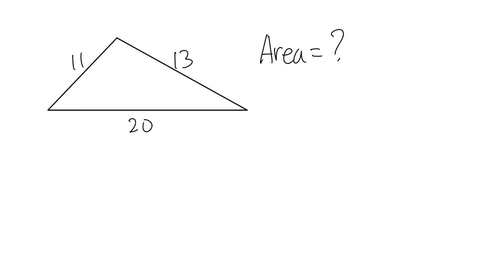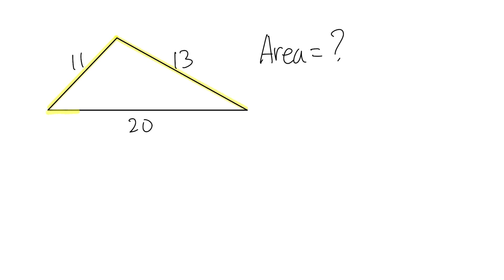Let's talk about how we can find the area of a triangle when we are given all three sides. For this triangle, we have this side being 11, this side being 13, and this side being 20. And let's just get to work.